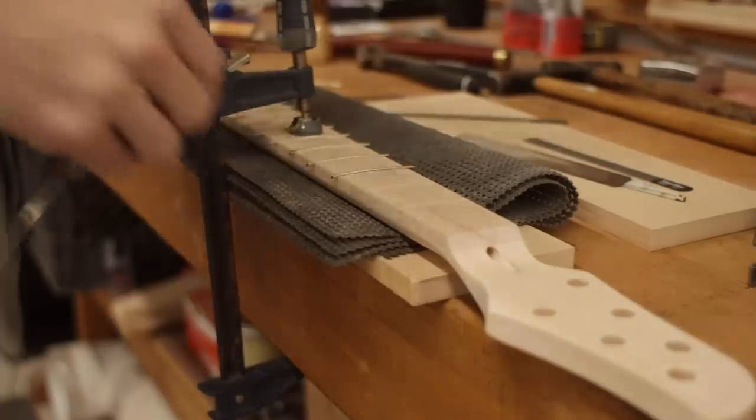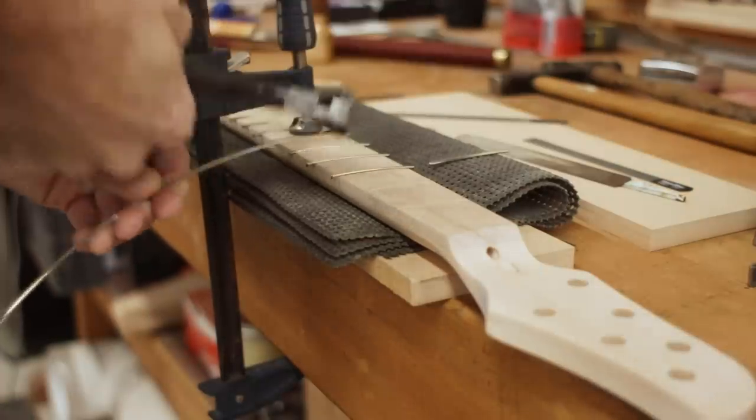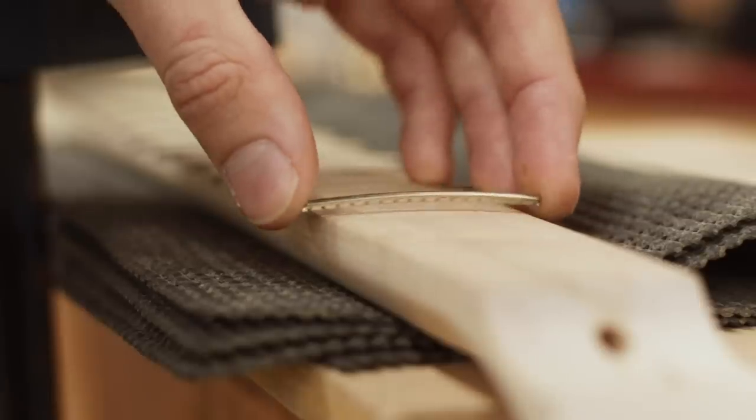There was a little bit of experimenting with where to place the wheels to get the bend right, but you essentially want to bend the fret wire slightly more than the radius of your fretboard, and I was pretty much able to get just that.